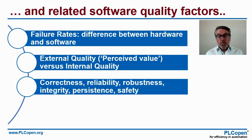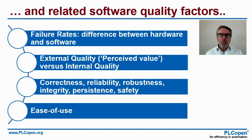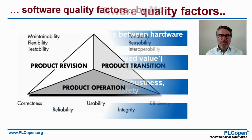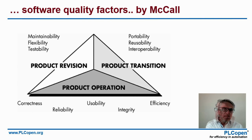Terms like correctness, reliability, robustness, integrity, persistence, and safety — are these what we focus on? Or do we focus on ease of use? Think about your phone and how easy it is to use certain apps. If you look at the quality factors as defined by McCall, represented in a quality triangle, you see three things: product revision, product transition, and product operation.